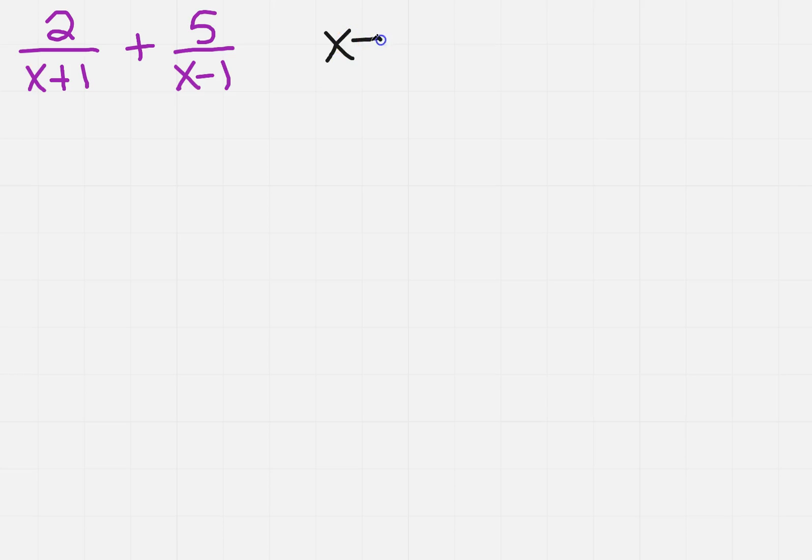So we know looking at each one of them, x cannot be a plus or a minus 1. That would give us that 0 in the denominator.